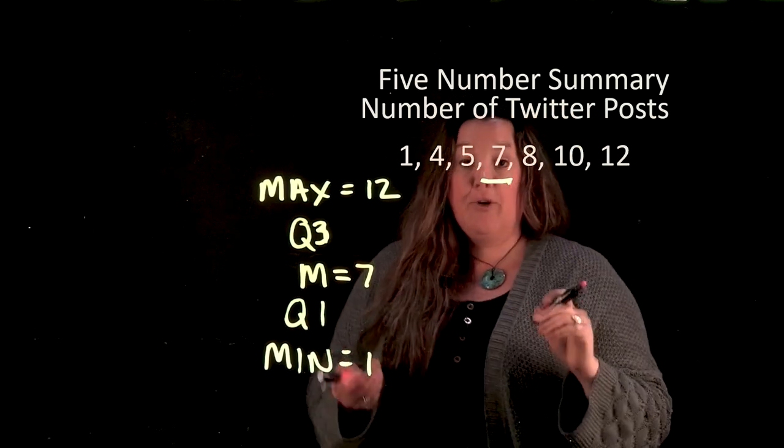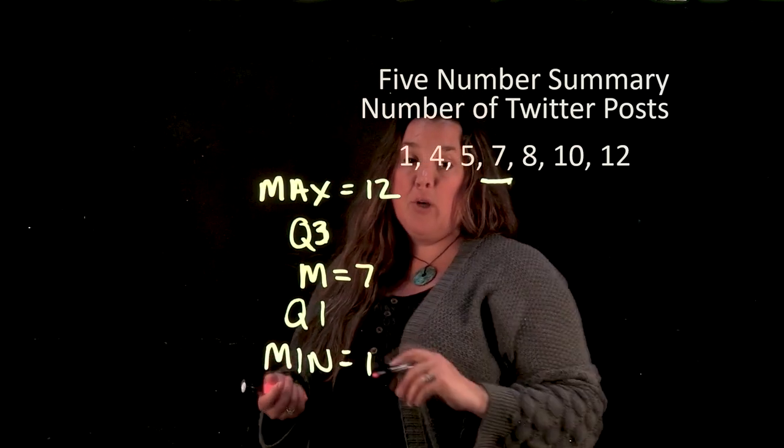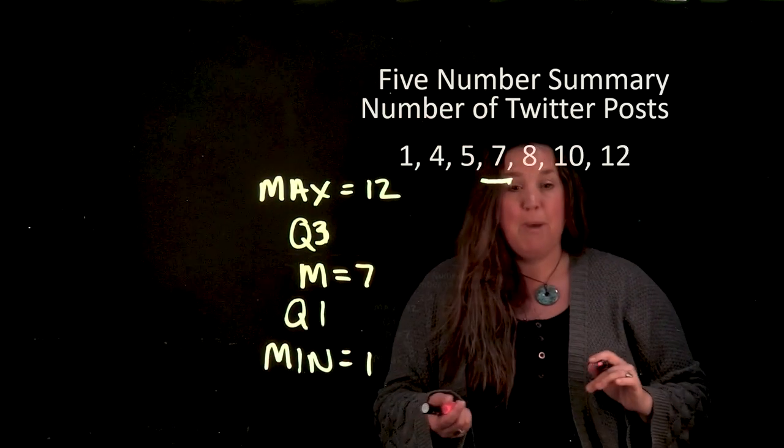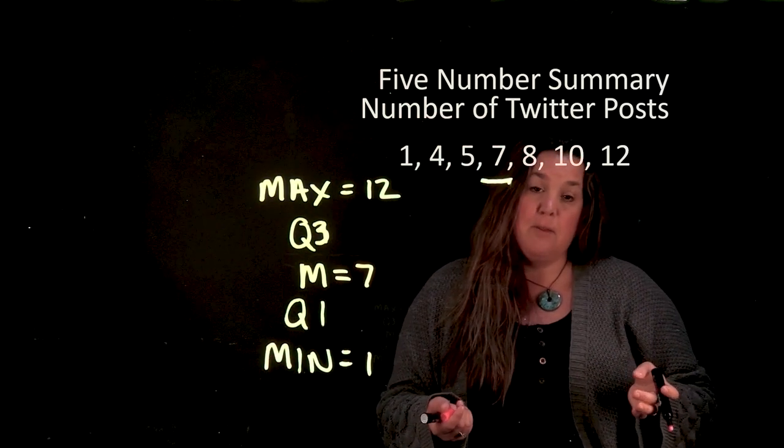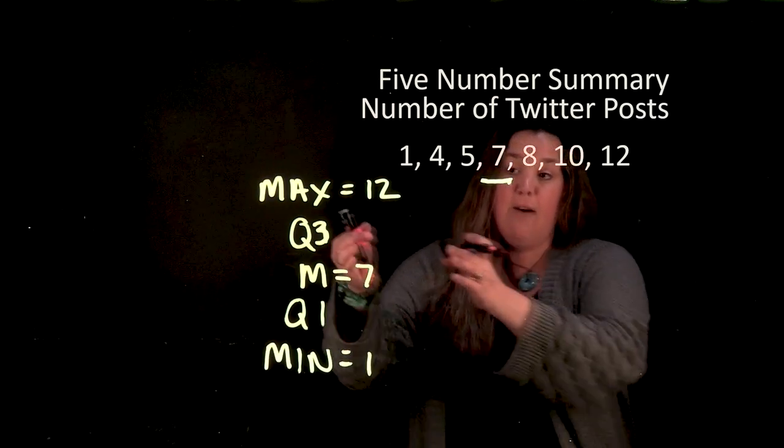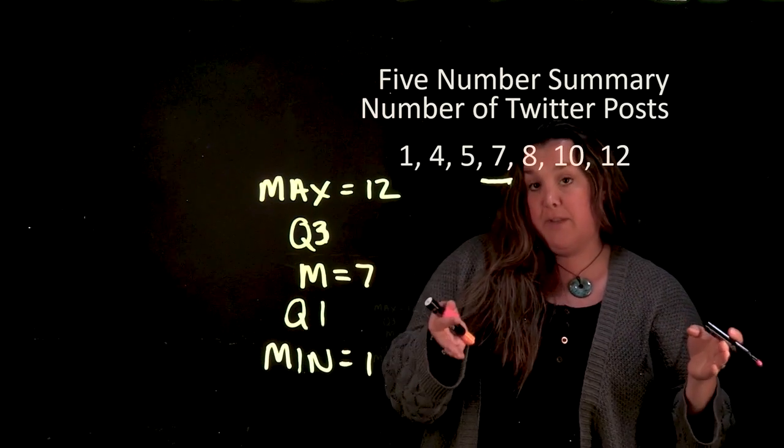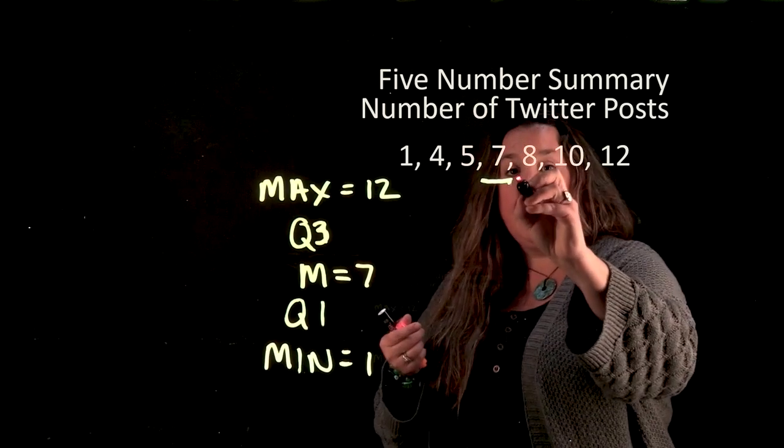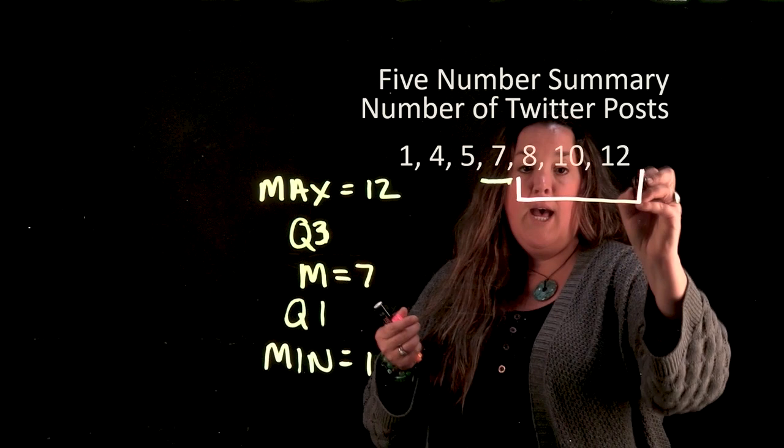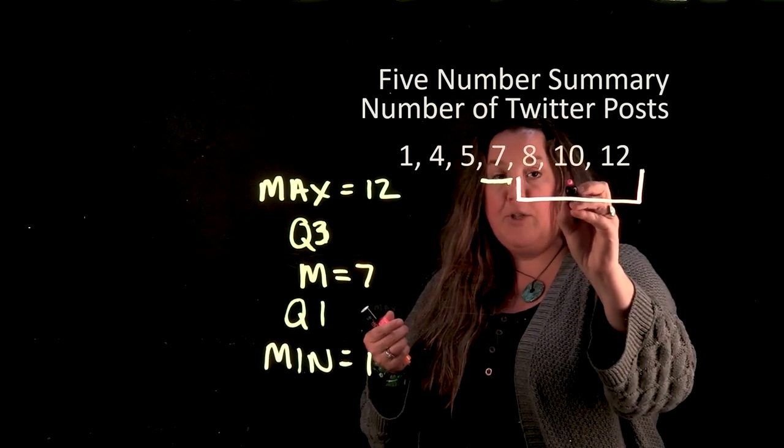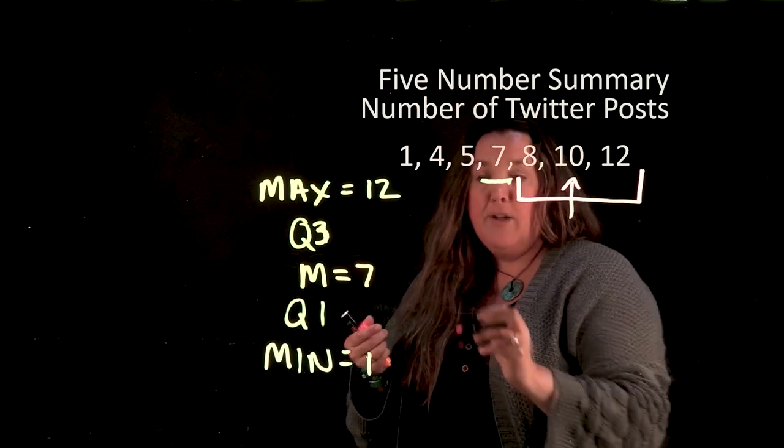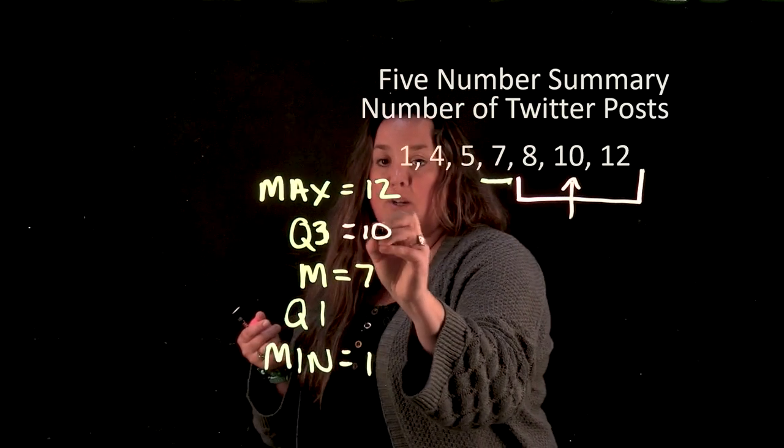Okay so now when we find Q3 and Q1 we're going to use a similar method to what we did for finding the median but we're going to instead have for Q3 it's going to be the median of the top half of the data. So here we're going to take the top half of the data and it's going to be the middle observation or the median for that. So here our Q3 is going to be 10.